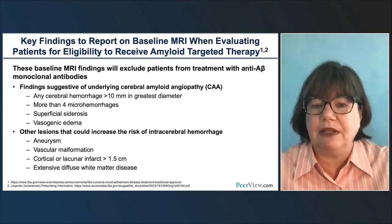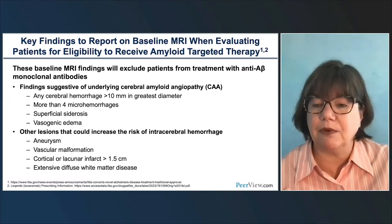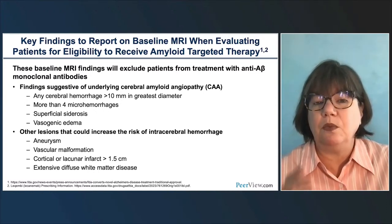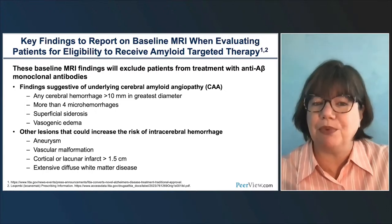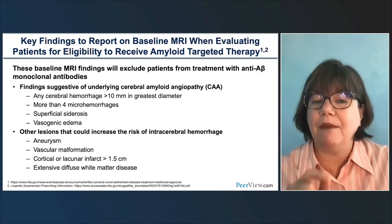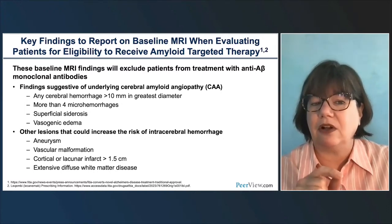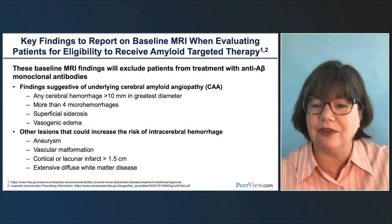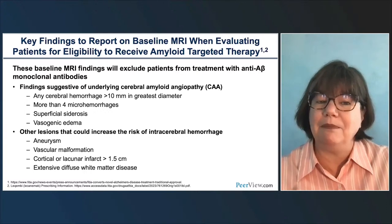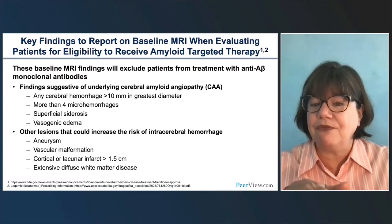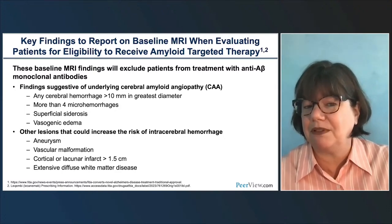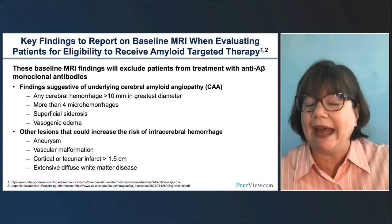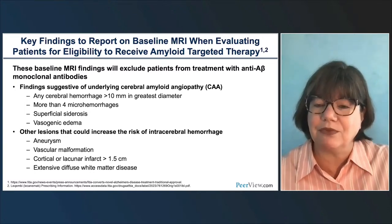Key findings we need to report: beyond the normal elements of our report—infarcts, vascular dementia, other findings—we need to explicitly call out hemorrhages. If more than 10 millimeters, that's a macrohemorrhage; call those out explicitly. Microhemorrhages matter a lot—they're hard to count, but on the baseline, if they have five or more, that is a contraindication to therapy with many of these medications. Similarly, superficial siderosis raises hemorrhage risk on these therapies. Obviously, report active findings of vasogenic edema, aneurysms, vascular malformations, and infarcts both small and large.